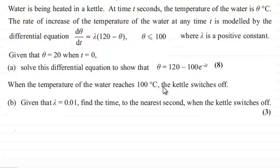Now in this part, it's telling us that when the temperature of the water reaches 100°C, the kettle switches off. Given that λ = 0.01, find the time to the nearest second when the kettle switches off. If you'd like to have a go at this one, pause the video. When you come back, I'll take you through the worked solution.